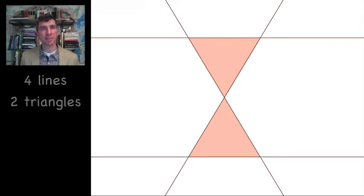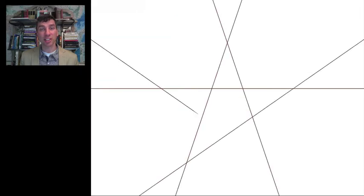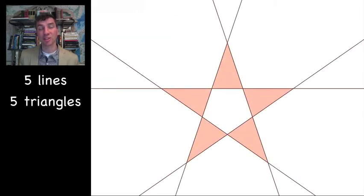How many with five lines? I suggest that you take a little break and sit down with a piece of paper and try to figure out how many triangles, non-intersecting, that you can make with five lines and then come back to the video. Okay, so the answer is that you can actually come up with five different triangles with five lines.